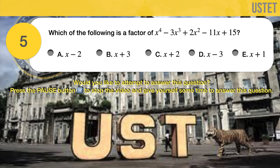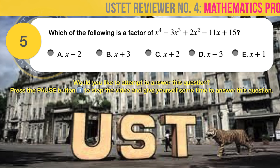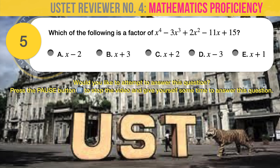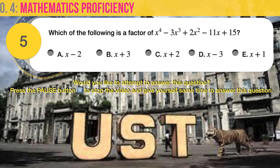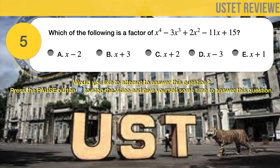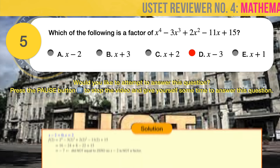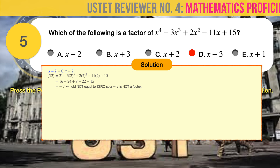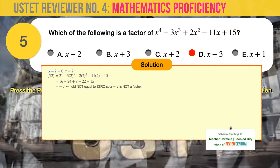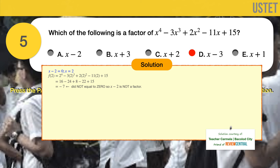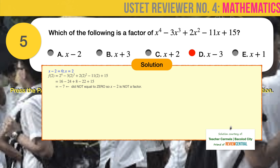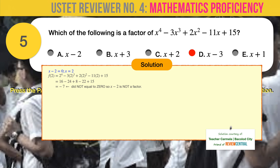Question number 5. Which of the following is a factor of x⁴ minus 3x³ plus 2x² minus 11x plus 15? A: x minus 2. B: x plus 3. C: x plus 2. D: x minus 3. E: x plus 1. The correct answer is D, x minus 3. Recall from algebra that a zero of a function is an input value that produces an output of zero — a root of a polynomial is a zero of the corresponding polynomial function. Let's evaluate each answer choice to determine which is a factor of the polynomial.